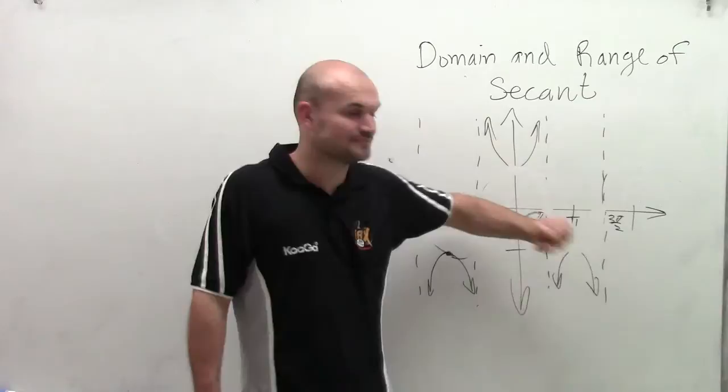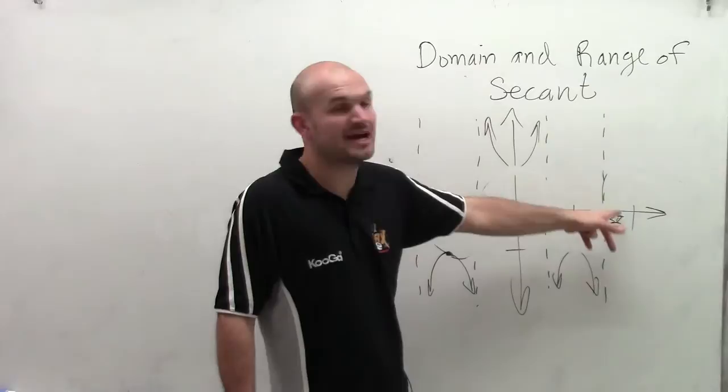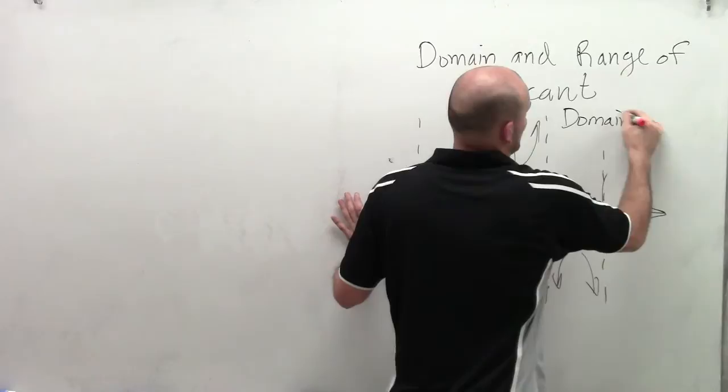So we notice that each vertical asymptote was created because we can't evaluate our secant function at those points. We have a vertical asymptote at pi halves, at 3 pi halves, negative pi halves, and at negative 3 pi halves. So besides that, all other x values can be evaluated in our function.